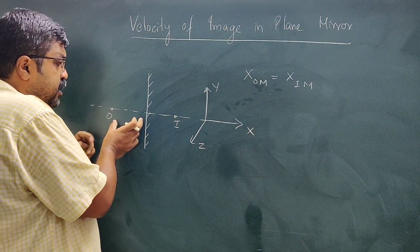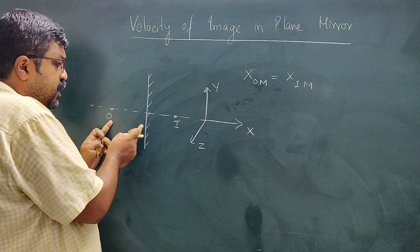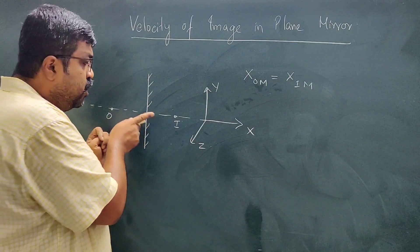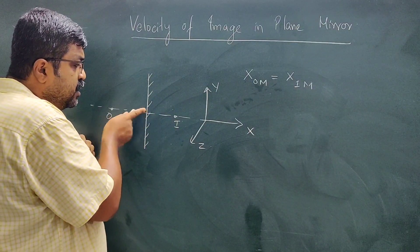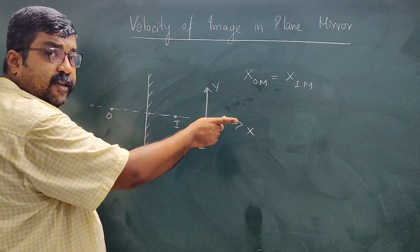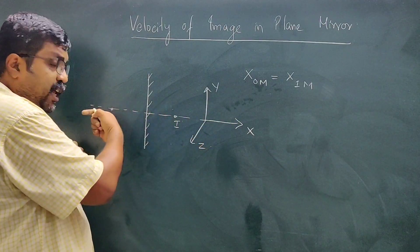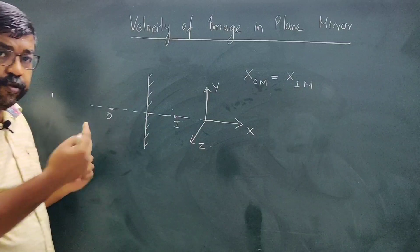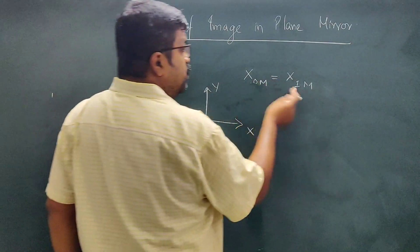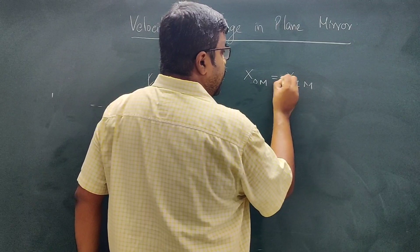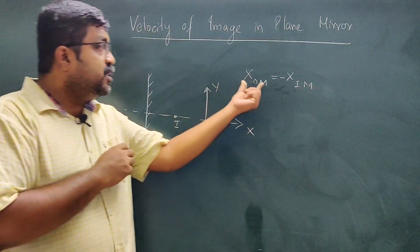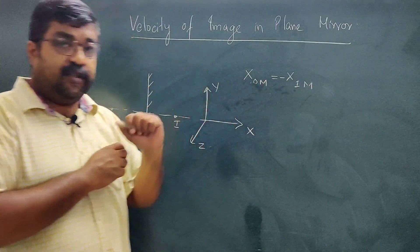The magnitude of both distances is the same, but the signs will be opposite — because the object is on one side and the image is on the other side. So the sign of these two will be opposite, meaning there will be a negative sign: the position of the image with respect to the mirror is the negative of the position of the object with respect to the mirror.